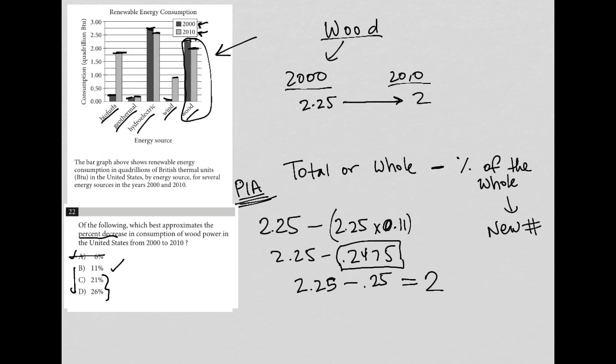And I can just tell you what that number is. So 2.25 minus 0.2475 is 2.0025. So very close to two. So if 11% decrease got us that close to two, 21% is going to be way too big. 26% is way too big. So our best answer here is choice B.